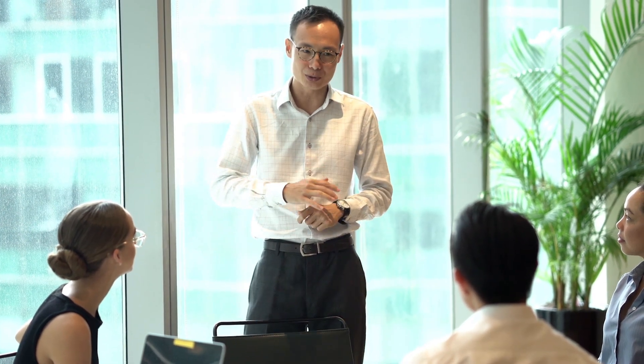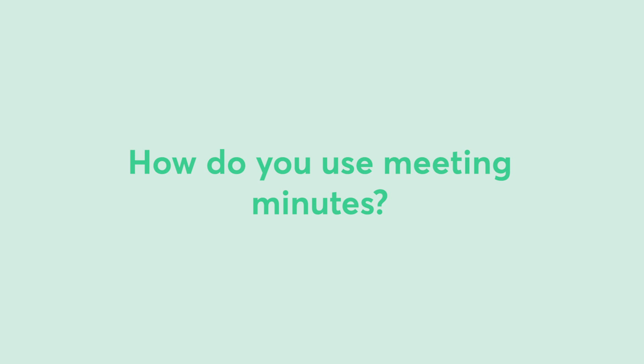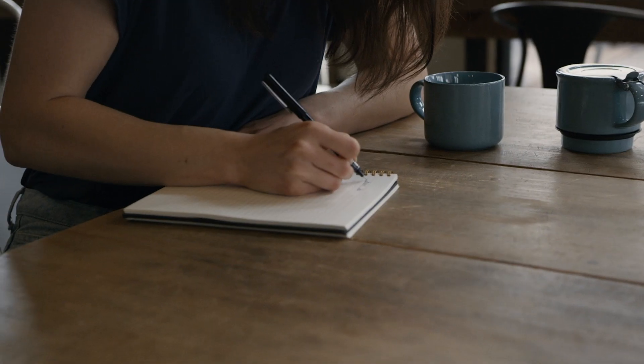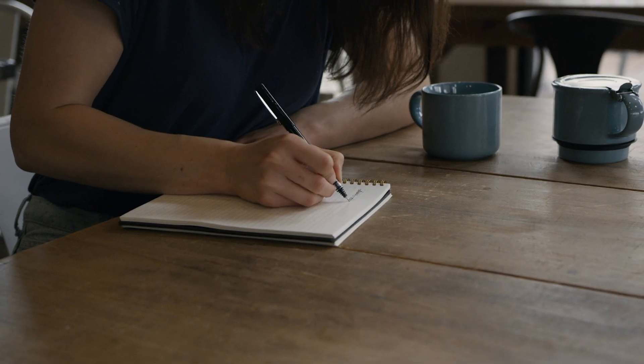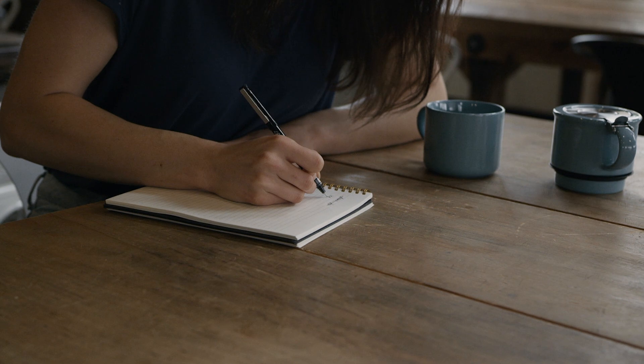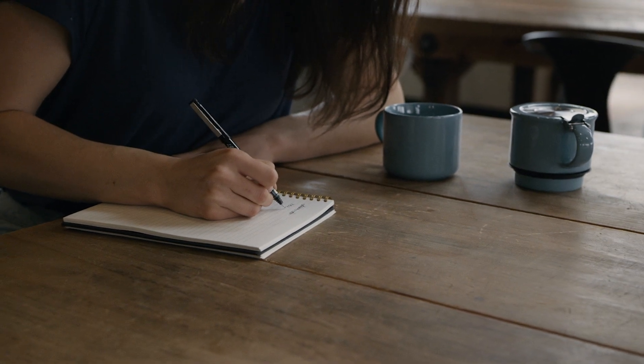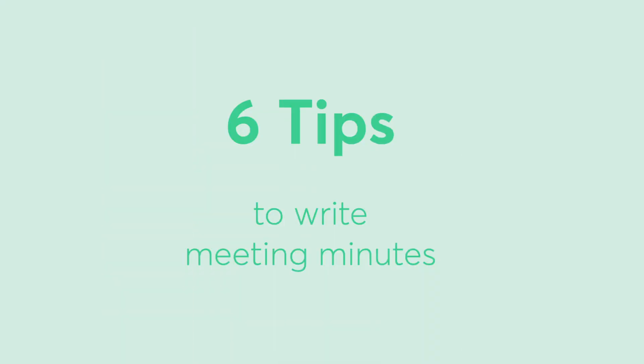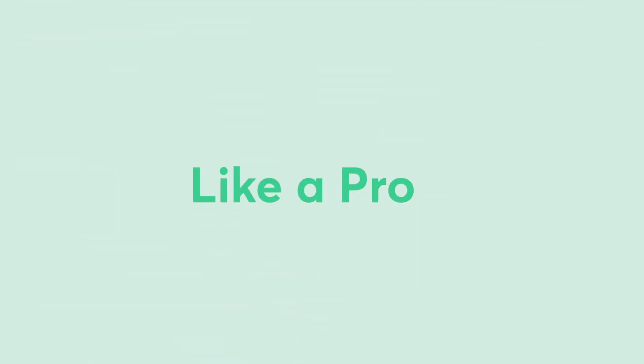Meeting minutes are the official summary of what happened during a meeting. Use them as a record for anyone who is unable to attend and as an artifact for what decisions were made during the meeting. To get you started, here are six tips to write meeting minutes like a pro.